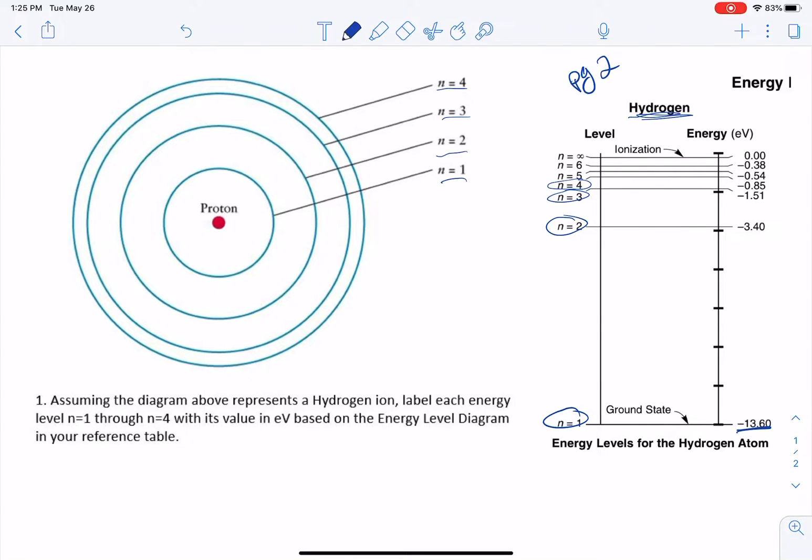So n1 is negative 13.6 eV, n2 is negative 3.40 eV, n3 is going to be negative 1.51 eV, and n4 is going to be negative 0.85 eV. So that is the different energy level for that electron to jump, leave that orbital, basically.